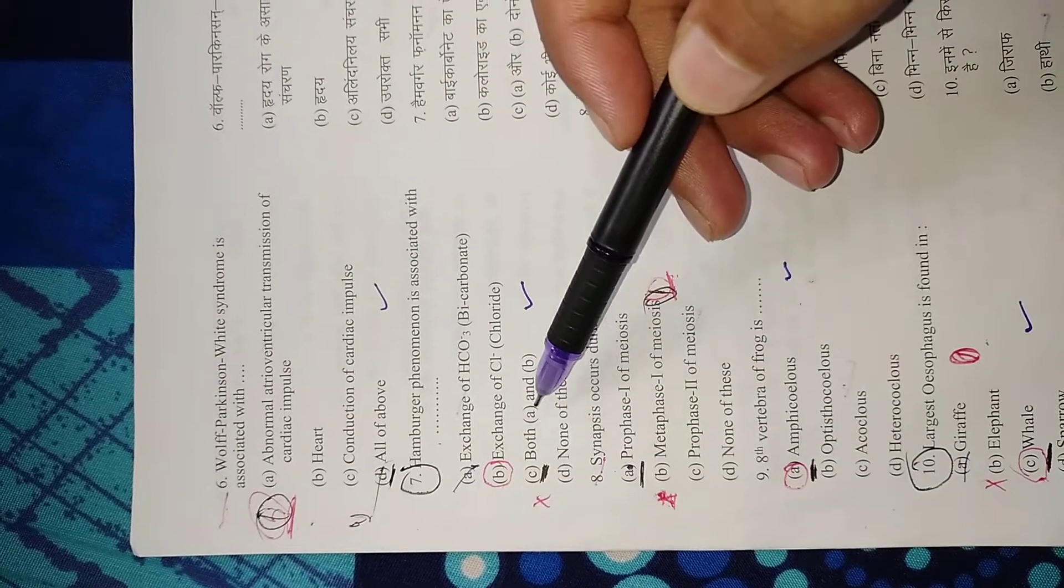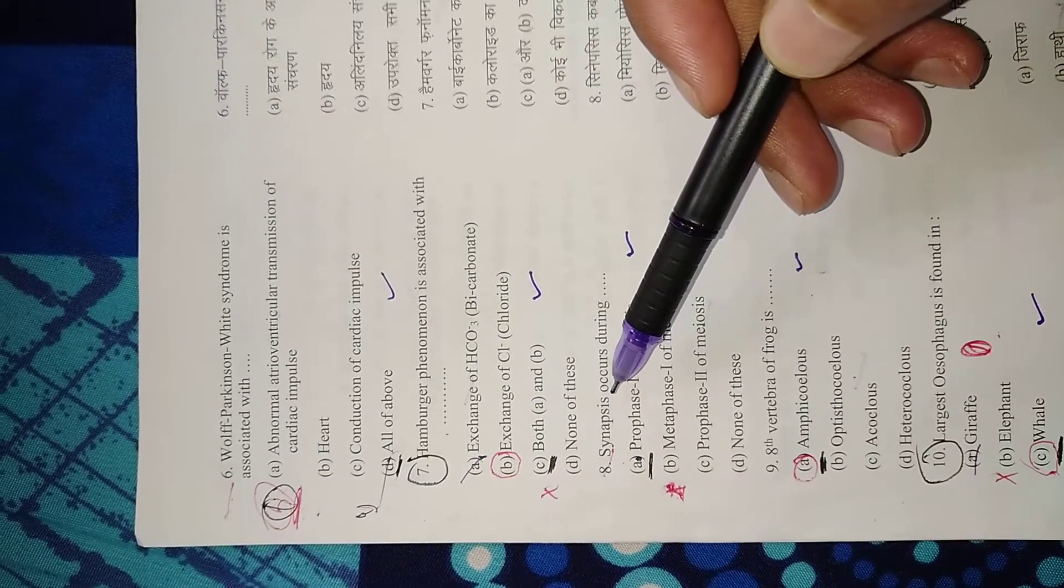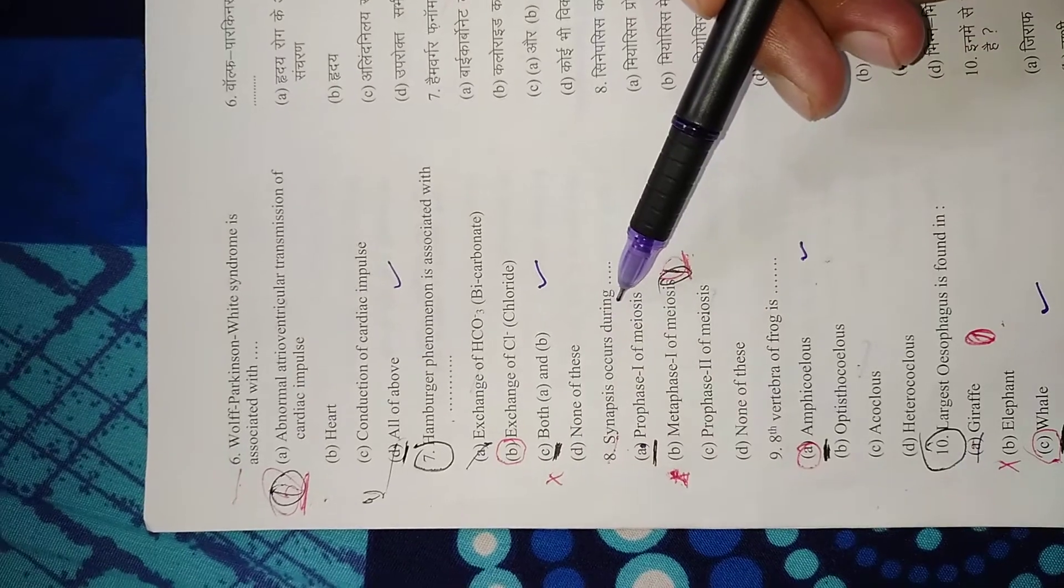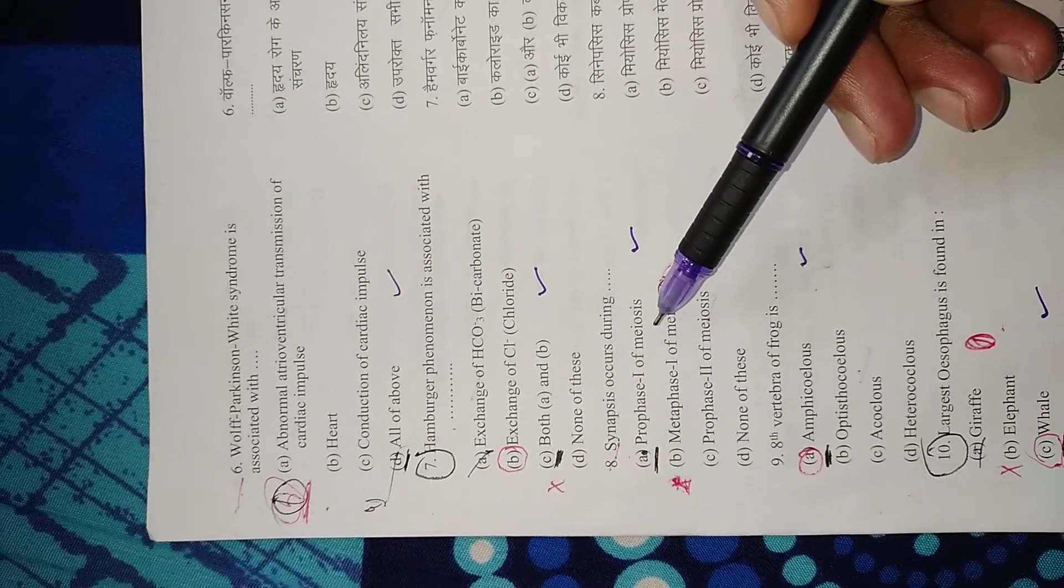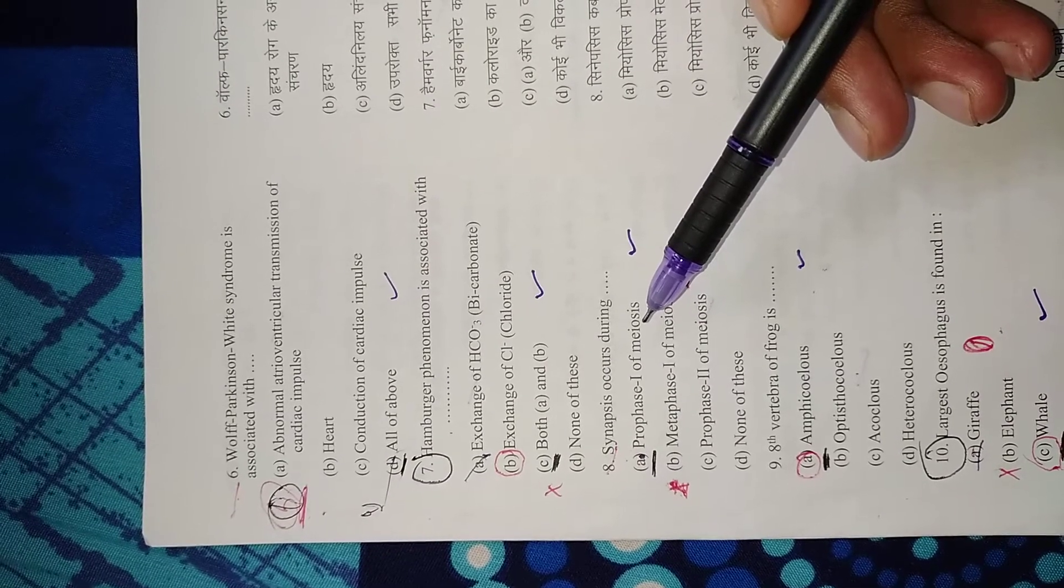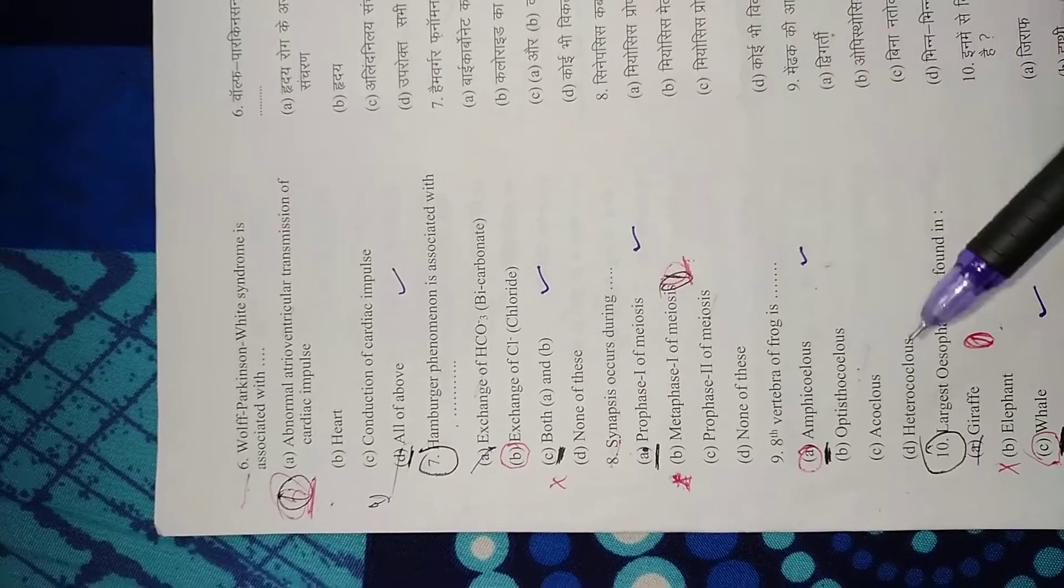Right option is C, both A and B. Question 8: Synapsis occurs during? It occurs during prophase 1 of meiosis. Right option is A, prophase 1 of meiosis.